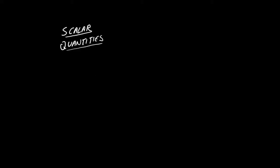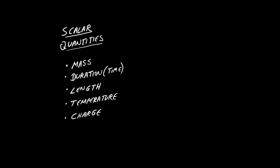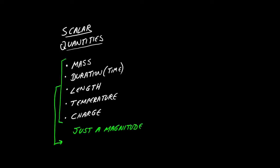Let's begin at the beginning and list some scalar quantities. Think about mass, duration, length, temperature, charge. These physical quantities are all well described with a single number. They just have a magnitude, although some may go negative, so it's a magnitude and a sign. But a simple number is adequate to describe these things.